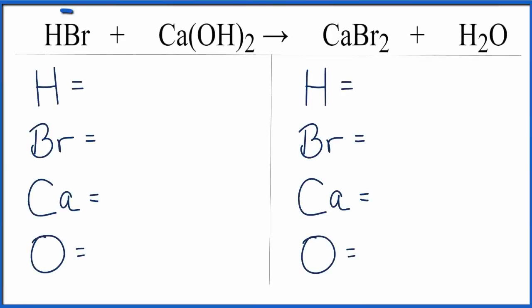In this neutralization reaction, we have hydrobromic acid plus calcium hydroxide yielding calcium bromide plus water. Let's count the atoms up on the reactant side.